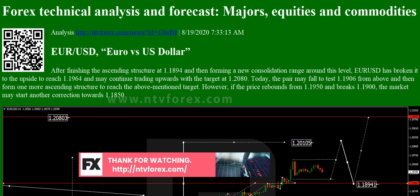BTCUSD: After finishing the descending correction at 11,630.00, BTCUSD is expected to grow towards 12,000.00 and may later fall to reach 11,800.00, thus forming a new consolidation range. If the price breaks this range to the upside at 12,000.00, the market may start a new growth to reach 12,600.00; if to the downside at 11,600.00, it may continue the correction with the target at 11,000.00.